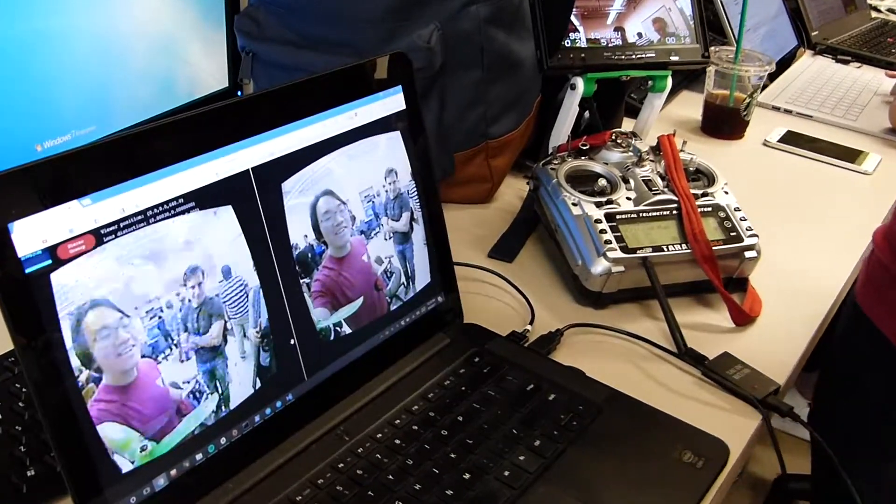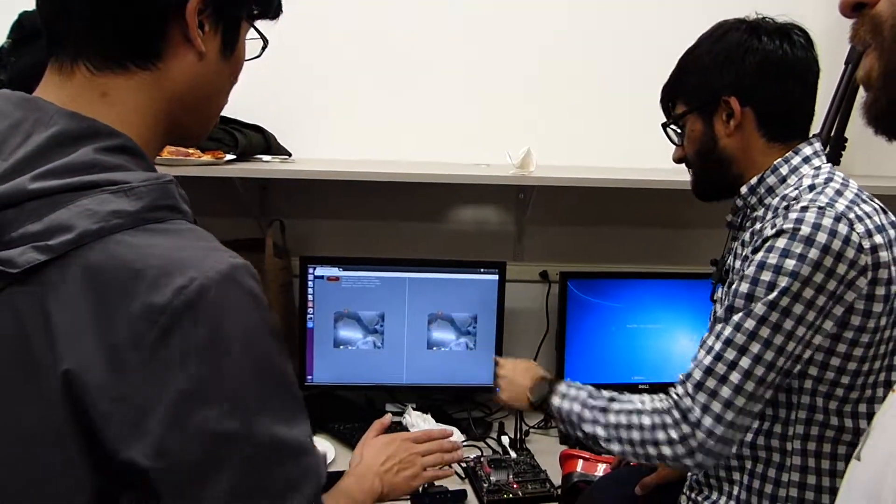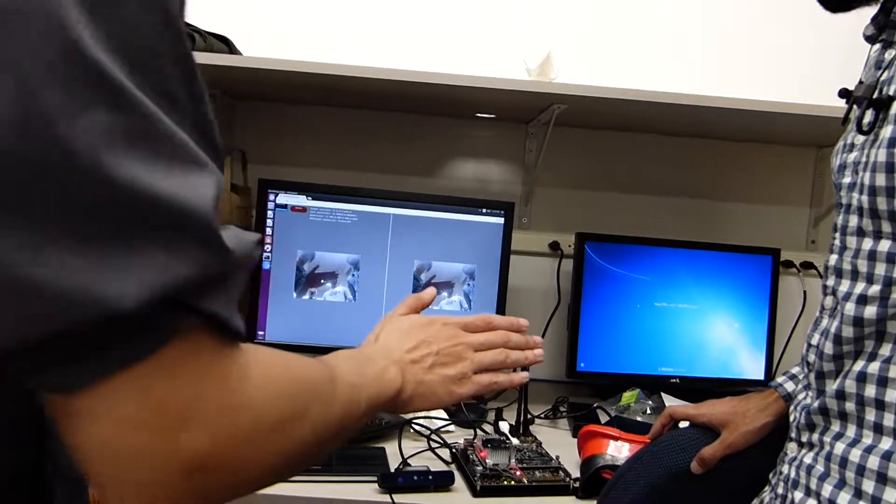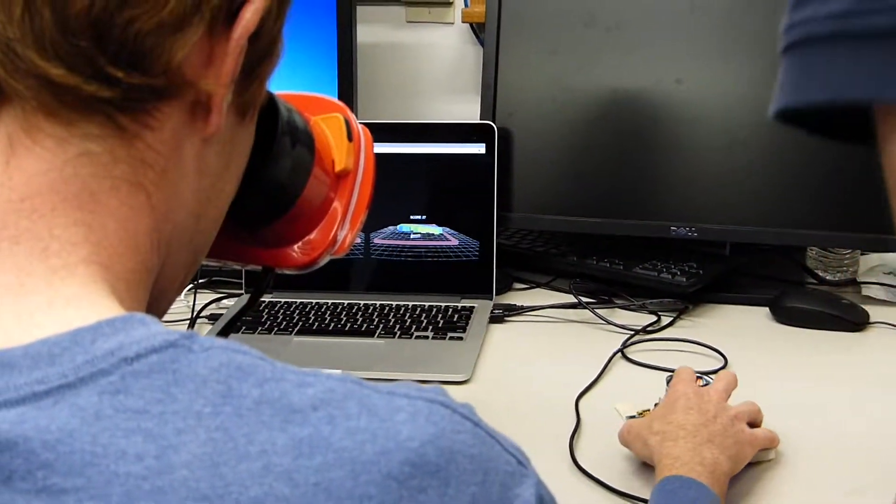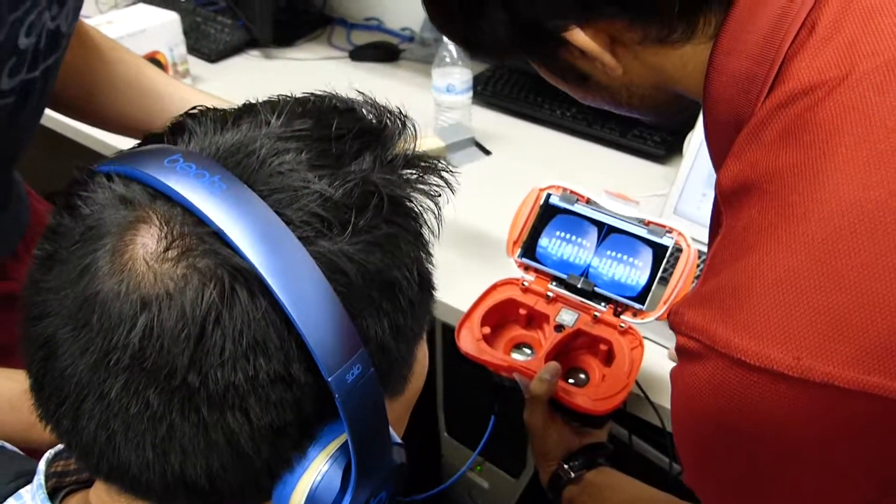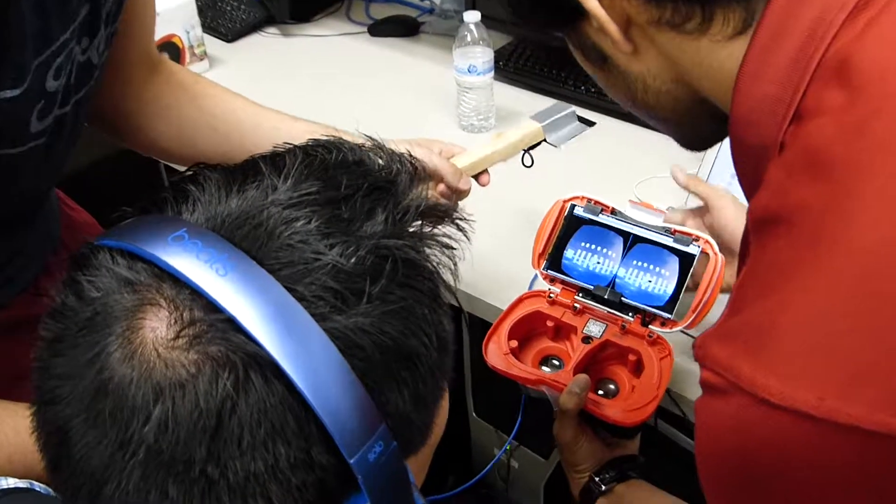With EE267, we created a class that teaches the technology behind virtual reality. In the first few weeks, we learn about computer graphics and rendering, we put that on the head-mounted display, learn about display shaders and optics, then we do sensor fusion on the IMU, the inertial measurement unit.